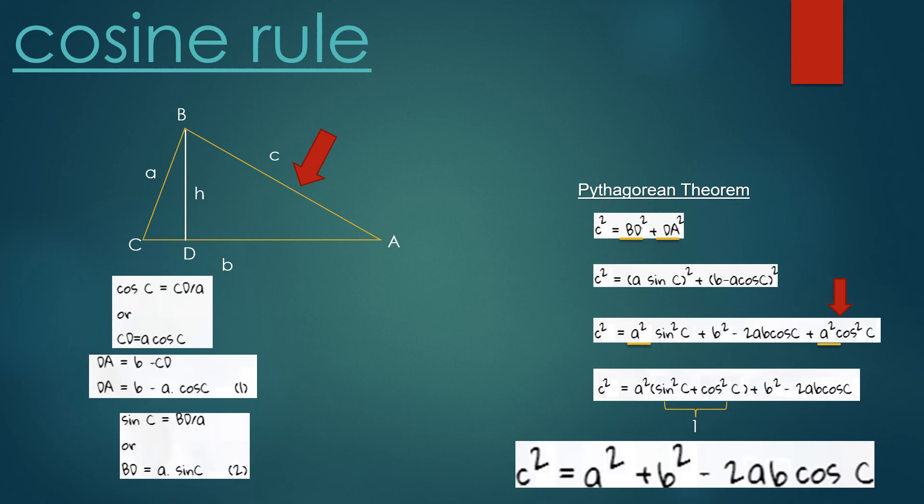So the cosine law is proved. We can get and prove the rest of the equations in a similar manner.